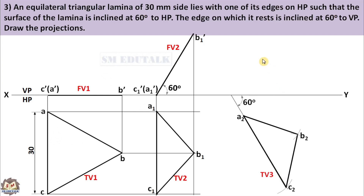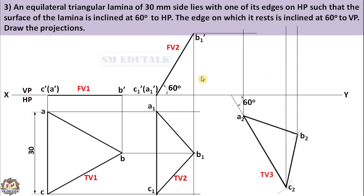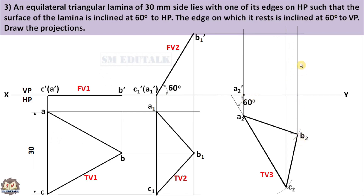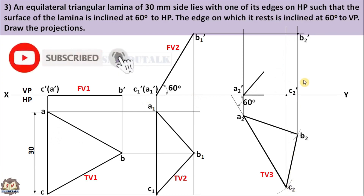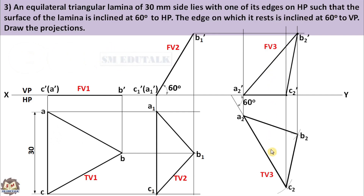To draw the front view in stage 3, project the corner points of stage 3's top view upwards and project the endpoints of stage 2's front view horizontally. The vertical and horizontal projection lines intersect to create three points: A2', B2', and C2'. Join these three points by a thick line. You get the front view in stage 3. The front view and top view obtained in stage 3 are the required projections of the given triangular lamina. Drawing is finished.